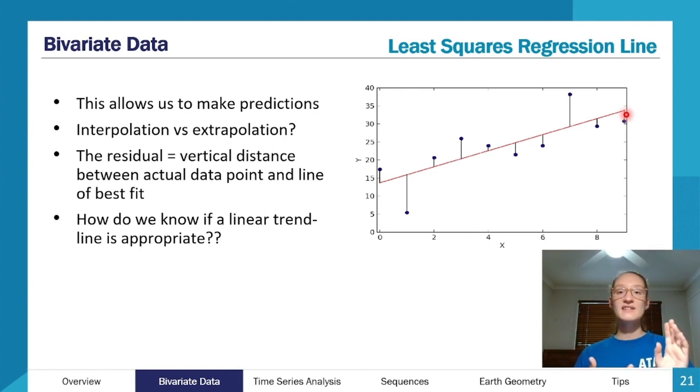Because we have this least squares regression line or this trend line, we can actually use that to make predictions by substitution. So for example, if you know the y-intercept and you know the slope and you want to know what y is when x is four, you can just sub that straight into the equation. Let x equals four, solve the equation and see what y would be, which would be this point about here on the line, so probably something in the low 20s.